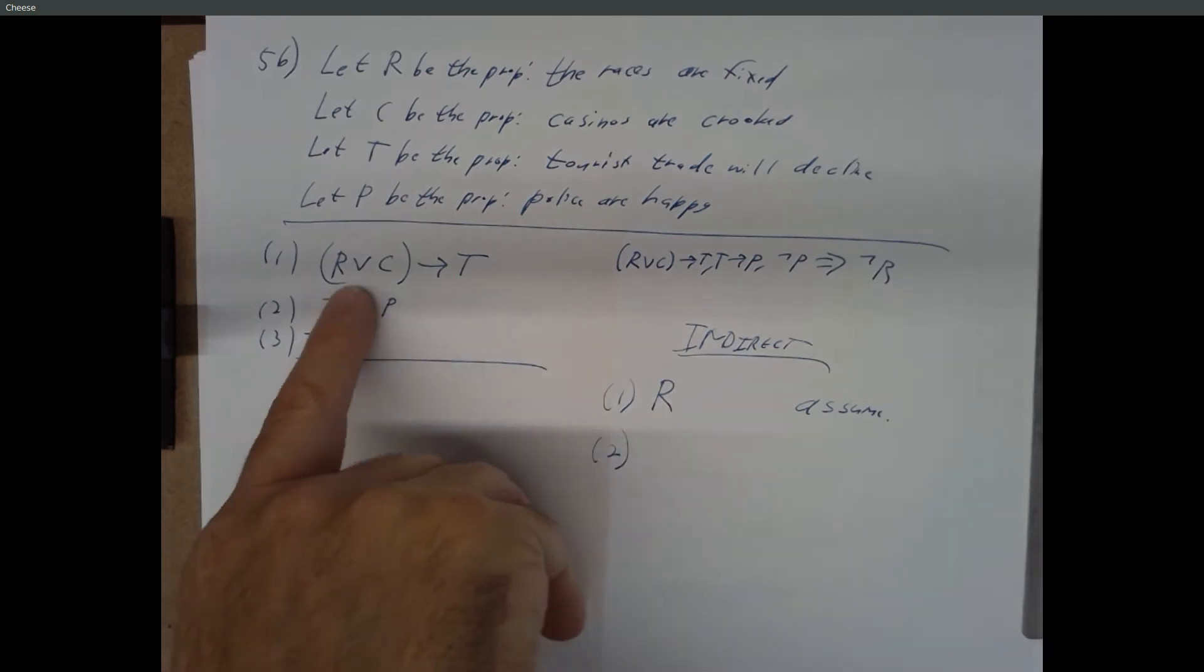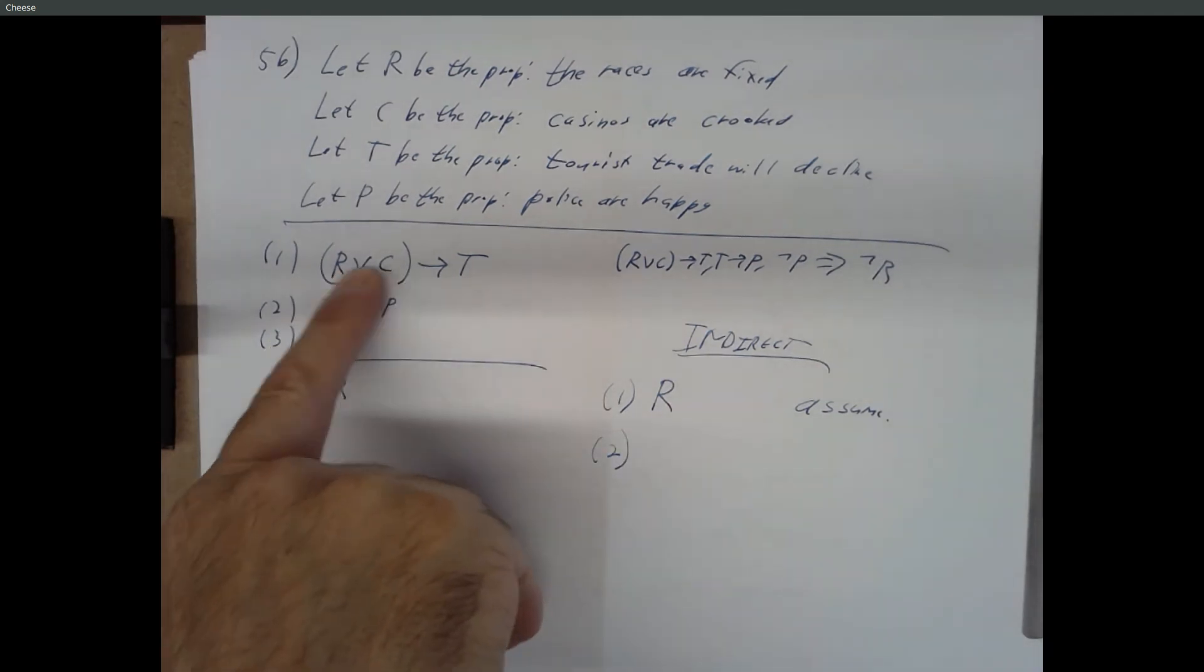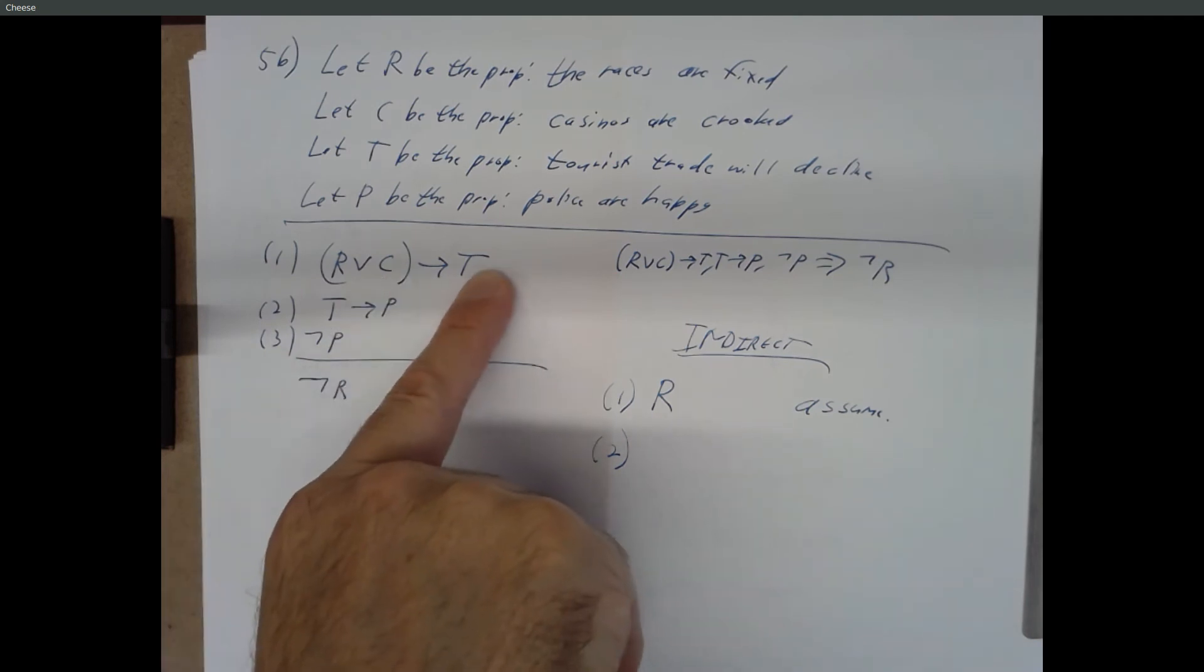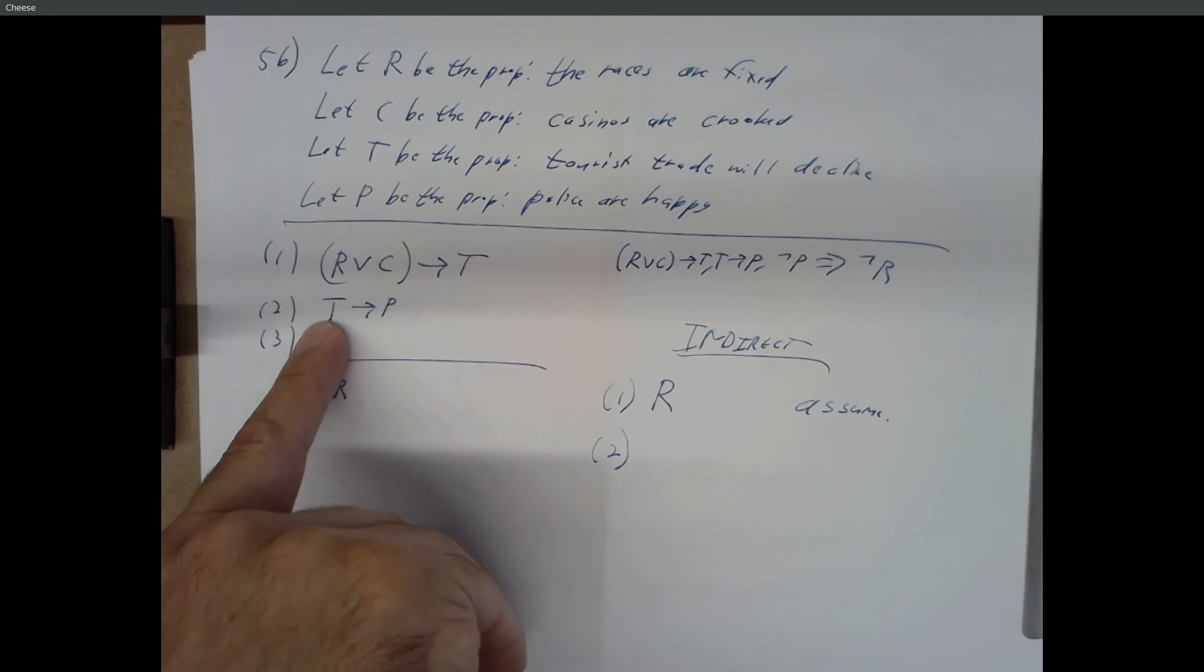So, if we start with R, if R is true, then we know R or C is true. And statement one says, therefore, T must be true. Statement two says, if T is true, then P has to be true. And statement three says, P is false. There's our contradiction right there. This is a very, very short path for an indirect proof.